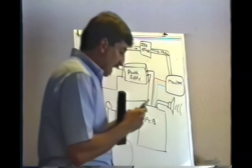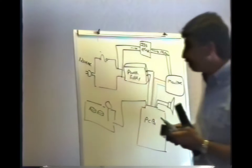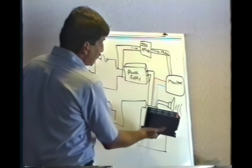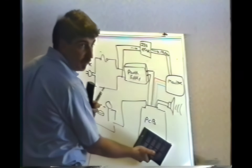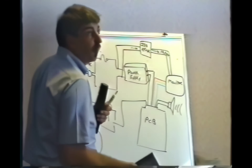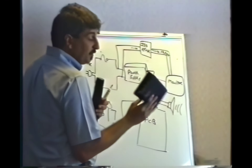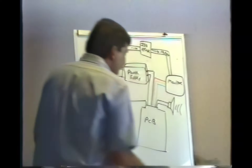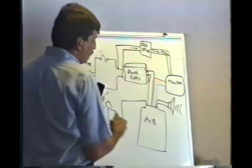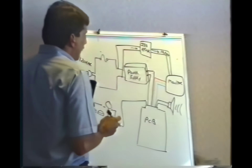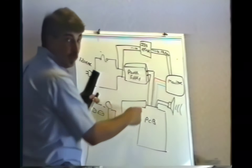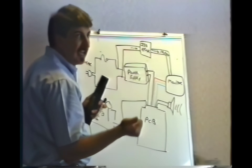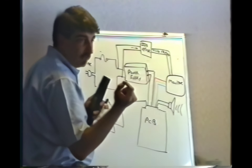The power supply creates the DC output for the logic board — the printed circuit board, PCB, logic board, computer board, whatever you want to call it. All computers require 5 volts DC to operate, and that comes from the power supply. Inputs to the computer board are the 5 volts DC from the power supply. There's also 12 volts and minus 5, which are for the sound systems usually.